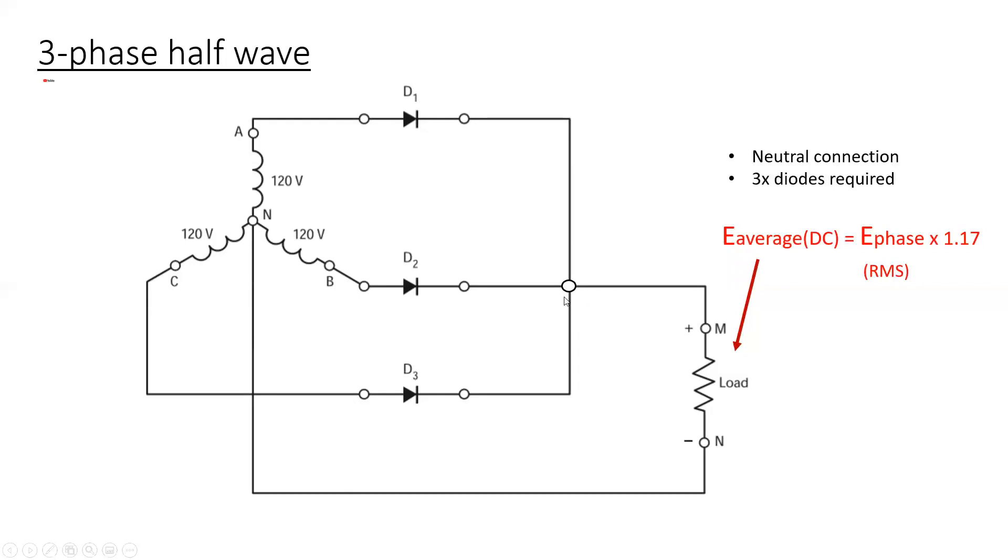The DC load connected to the common junction point of all the diodes and the other end connected to the neutral of the three-phase source for this particular system with 120 volt phase windings would render 140.4 volts DC. Let's take a look at an animation as to how this works.